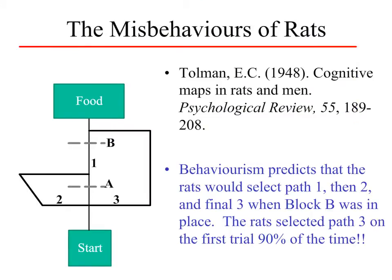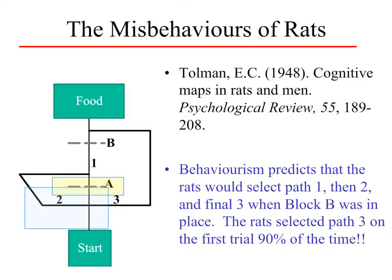Let's look at the ways in which rats sometimes misbehave. Tolman's classic article, 'Cognitive Maps in Rats and Men,' freely available online, highlights ways in which rats did not follow behaviorist predictions. In the experiment, rats start at a start box and need to reach a food box. With no roadblocks they take path one — the direct route. If a roadblock is placed at point A, both cognitive and behaviorist approaches predict rats would return to the choice point and take path two around the roadblock, and indeed the rats did that.